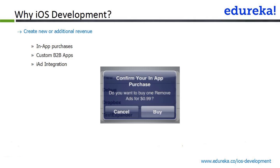The third channel is ad integration — this is the API for including ads in your app. Ads appear as a banner at the bottom of the screen, and if the user clicks on one, you get a small percentage of the revenue that the ad host receives.